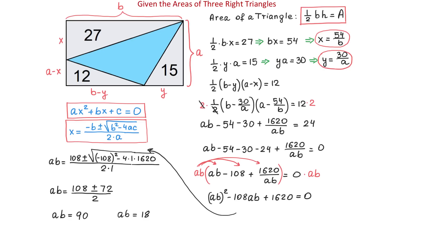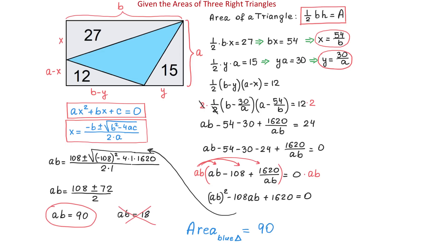Recall that the product AB represents the area of the rectangle and it cannot be smaller than the areas of these three triangles. Therefore we disregard AB equals 18 and keep AB equals 90. Now that we know the area of the rectangle, we subtract the areas of the three triangles: the area of the blue triangle is 90 minus 27 minus 15 minus 12, and the result is 36 square units. The problem is now completed.